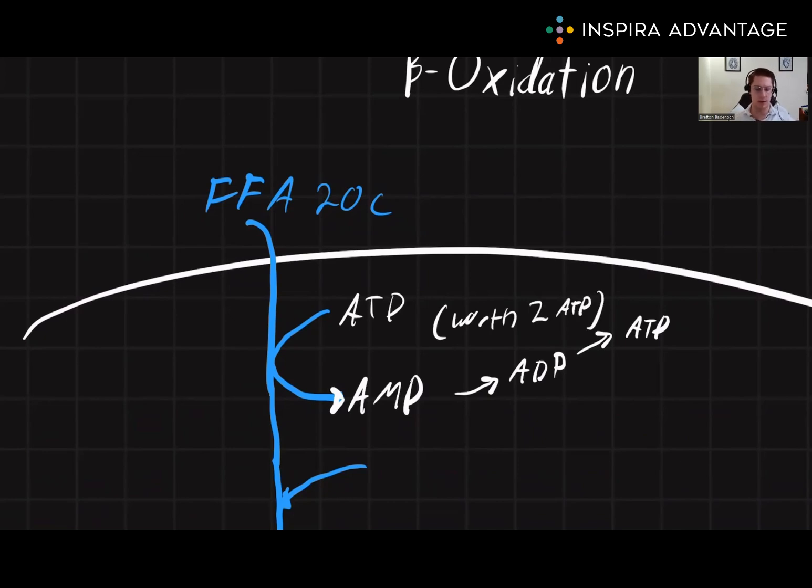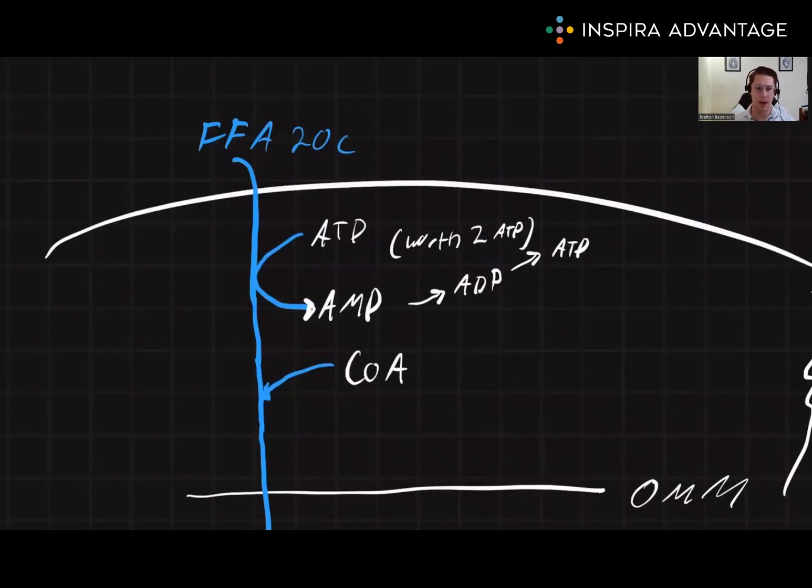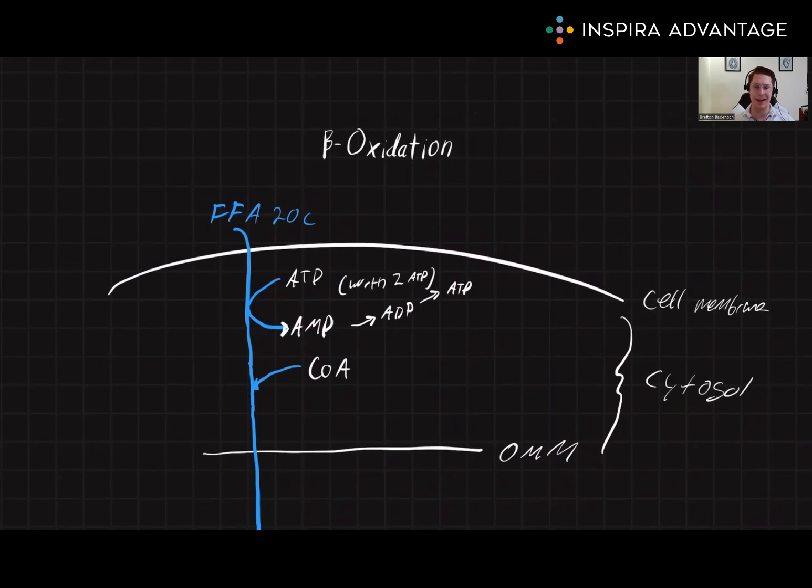Additionally, we also are going to need to modify this fatty acid a little bit. We're going to do this by adding a CoA group. Now this is all happening in the cytosol. We can only actually begin getting energy out of this when we bring it down to the mitochondria. So that's exactly what we're going to do.